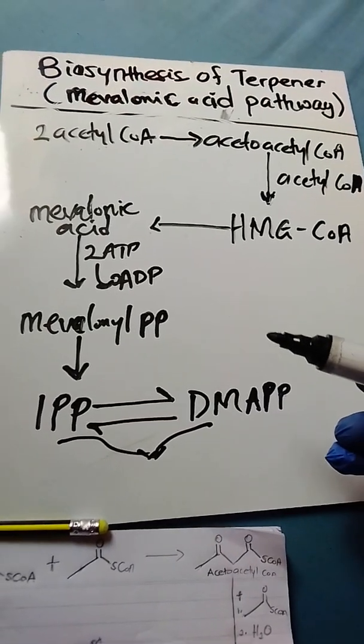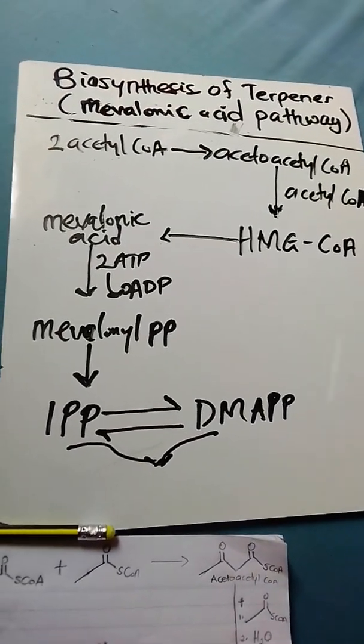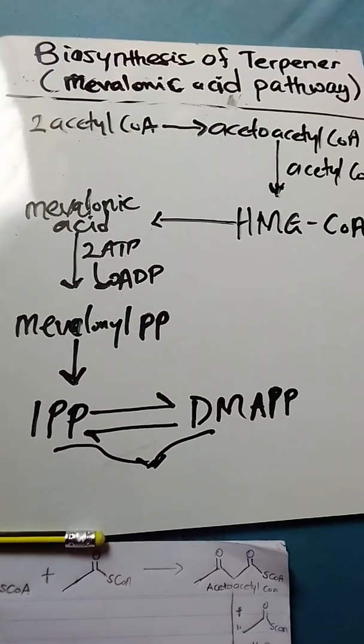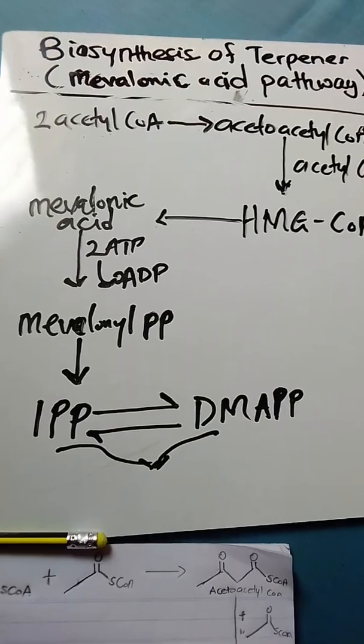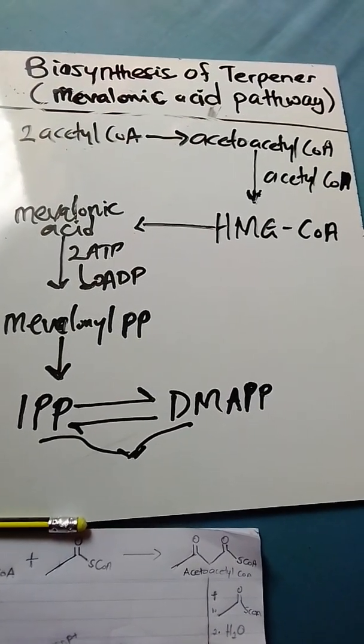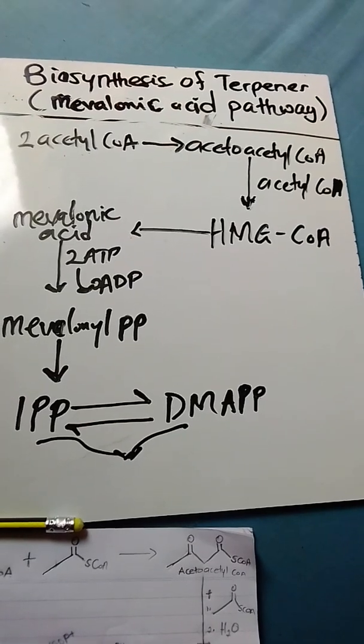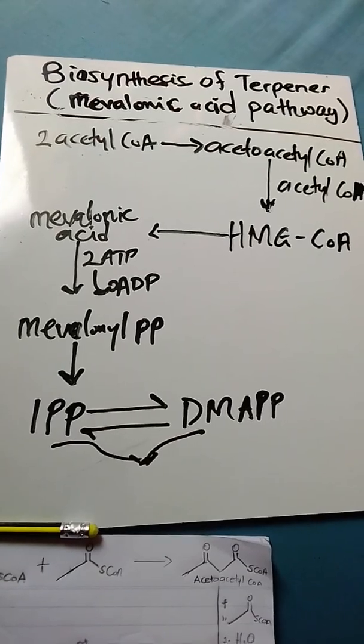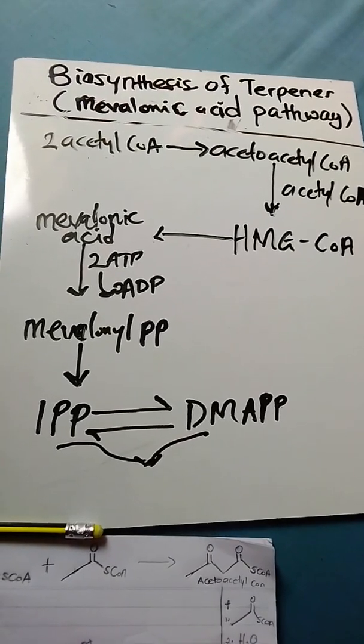So it is just a schematic representation of how the mevalonic acid pathway is represented. Three acetyl-CoA molecules undergo stepwise condensation to produce hydroxymethylglutaryl-CoA. The hydroxymethylglutaryl-CoA then undergoes reduction to produce mevalonic acid.